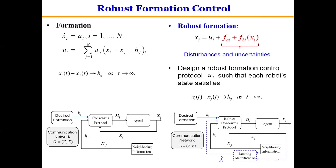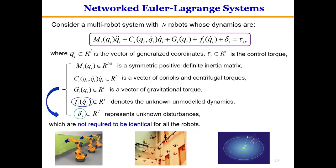Based on robust consensus methods, we can define formation control problems. For simplicity, only the first-order model is considered. For the formation problem, xi_dot = ui is the model; a controller is designed using graph information aij, state information xi and xj of agent i and its neighbors, and formation information hij, so that xi minus xj converges to hij. For the robust formation problem, the model has two additional terms for disturbance and unmodeled dynamics, and the controller includes a learning identification part to identify these.